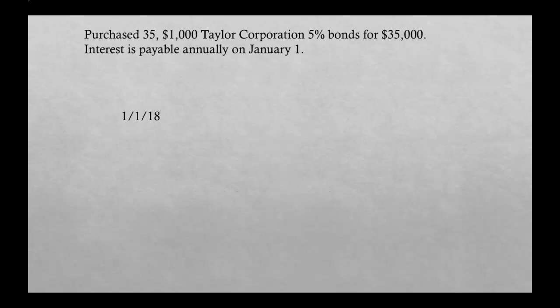Our first transaction: purchased 35 $1,000 Taylor Corporation 5% bonds for $35,000. Let's break it down piece by piece. The 35 is the number of bonds you are buying — so you're buying 35 separate bonds. $1,000 is the face value of each bond. 5% is our interest rate, which we'll use later when figuring out interest. $35,000 is the total amount of money spent when purchasing these bonds.